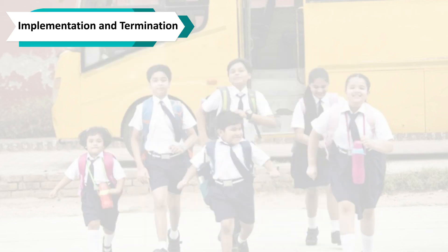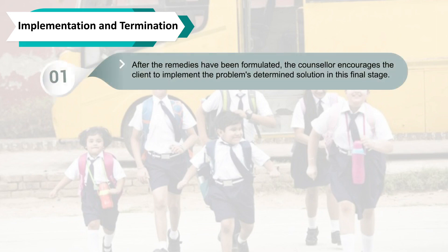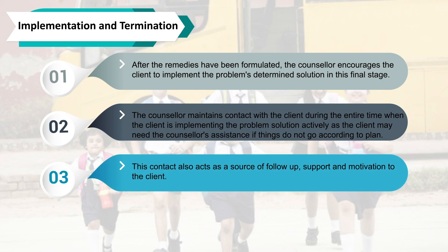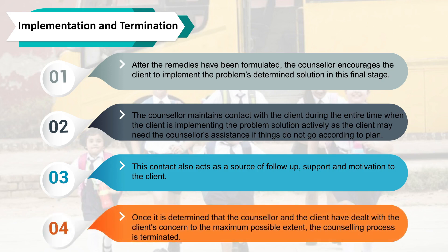Fourth stage: implementation and termination. After the remedies have been formulated, the counselor encourages the client to implement the determined solution. The counselor maintains contact with the client during the entire time when the client is actively implementing the solution, as the client may need the counselor's assistance if things do not go according to plan. This contact also acts as a source of follow-up support and motivation. Once it is determined that the counselor and client have dealt with the client's concerns to the maximum possible extent, the counseling process can be terminated.